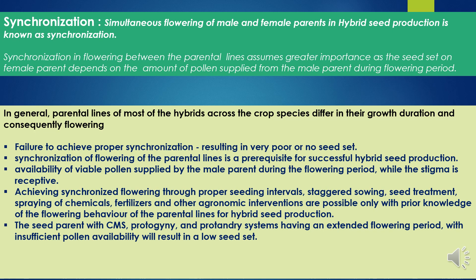Synchronization of flowering is a prerequisite for successful hybrid seed production because seed set on female parents depends on the availability of viable pollen supplied by the male parent during the flowering period while the stigma is receptive. Therefore it is essential to determine the flowering behavior in terms of its initiation, peak flowering, termination, and duration to take up an appropriate seeding and sowing plan to achieve synchronized flowering between the parental lines.